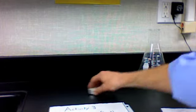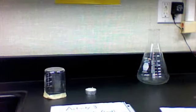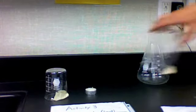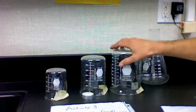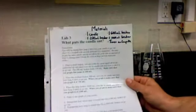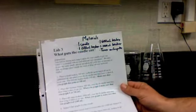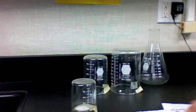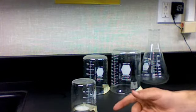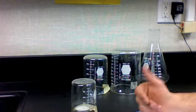In lab three, you'll again need just three different size beakers. You'll need a small, which says 250 on it, medium, which is 600, and large, which is 1,000. What you'll do for this one is follow the instructions on the sheet. What you're going to do is you're going to be timing how long it takes when you light your candle and put your beaker on top for something to happen. You're going to record that time and graph it on your sheet.